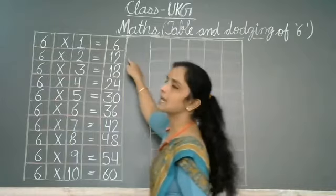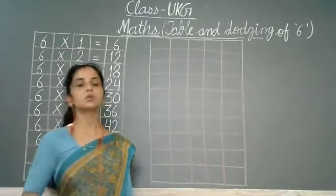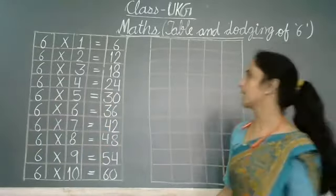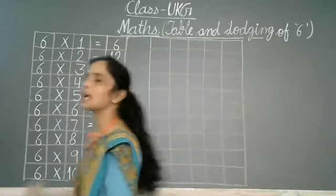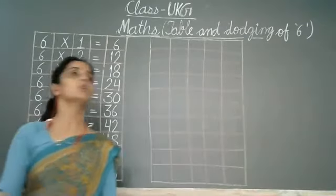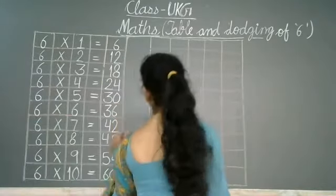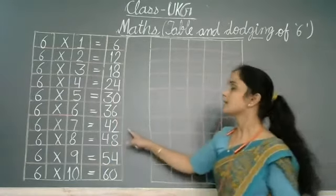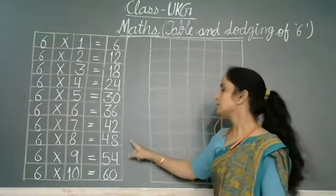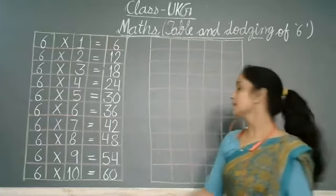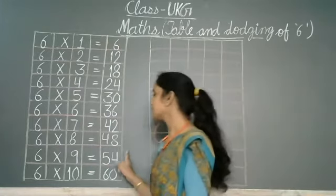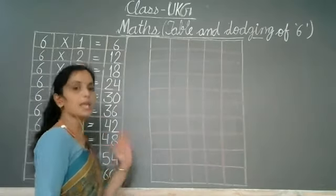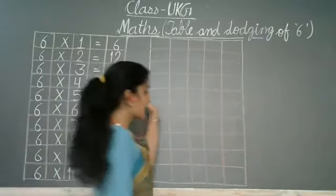Once more, repeat with me: 6 ones are 6, 6 twos are 12, 6 threes are 18, 6 fours are 24, 6 fives are 30, 6 sixes are 36, 6 sevens are 42, 6 eights are 48, 6 nines are 54, 6 tens are 60.